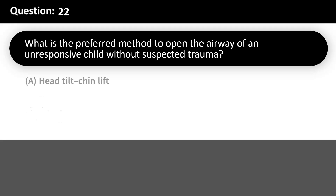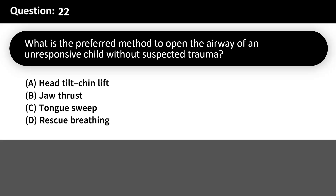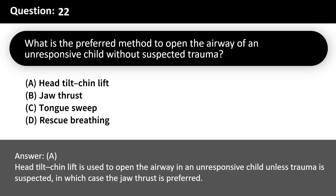What is the preferred method to open the airway of an unresponsive child without suspected trauma? A. Head tilt, chin lift. B. Jaw thrust. C. Tongue sweep. D. Rescue breathing. Answer: A. Head tilt, chin lift is used to open the airway in an unresponsive child unless trauma is suspected, in which case the jaw thrust is preferred.